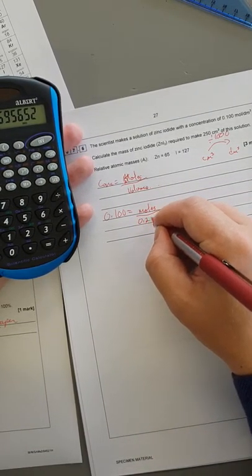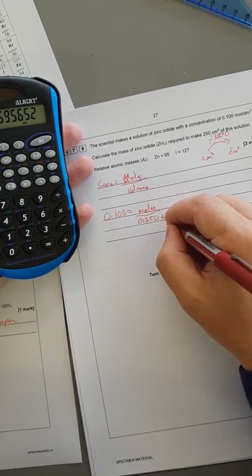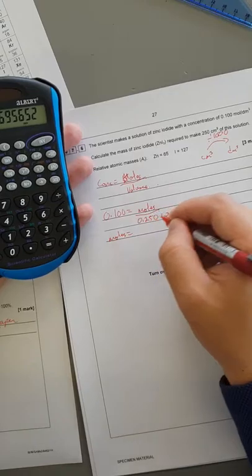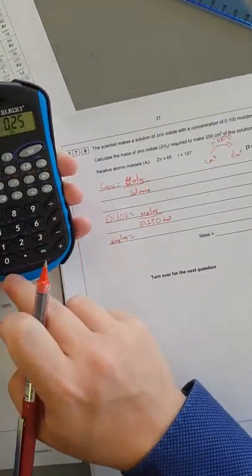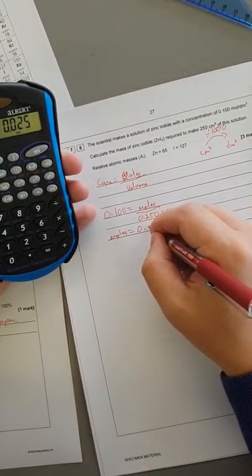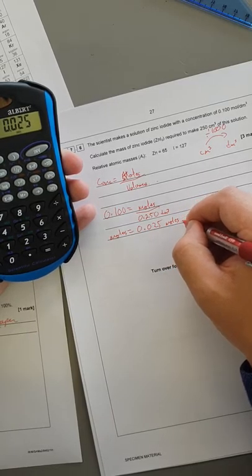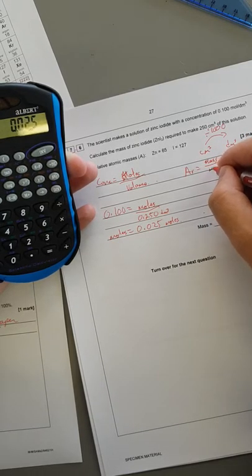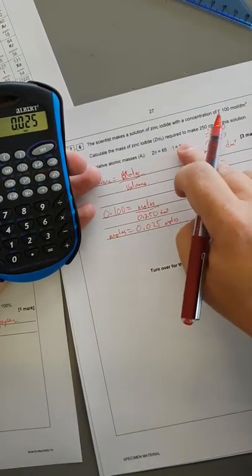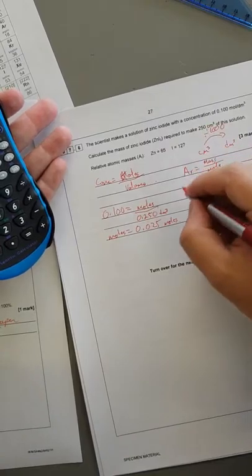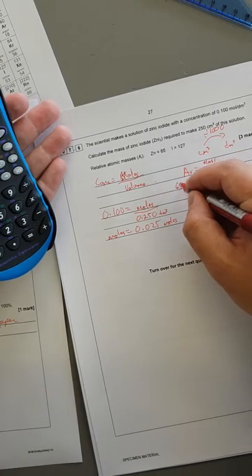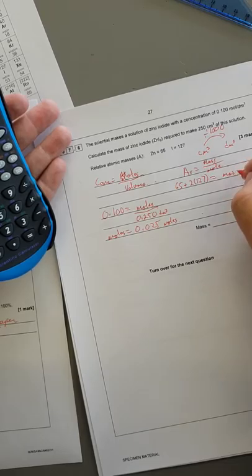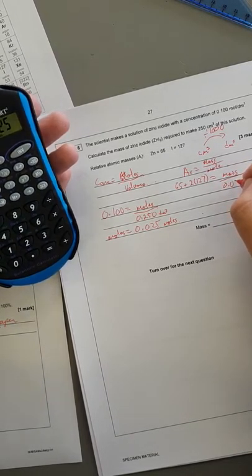The moles is 0.250 times 0.01, which is 0.0025 moles. We know that AR is mass per mole. My AR here, I've got to look at it as 65 plus 2 times 127, and that is equal to mass divided by 0.0025.